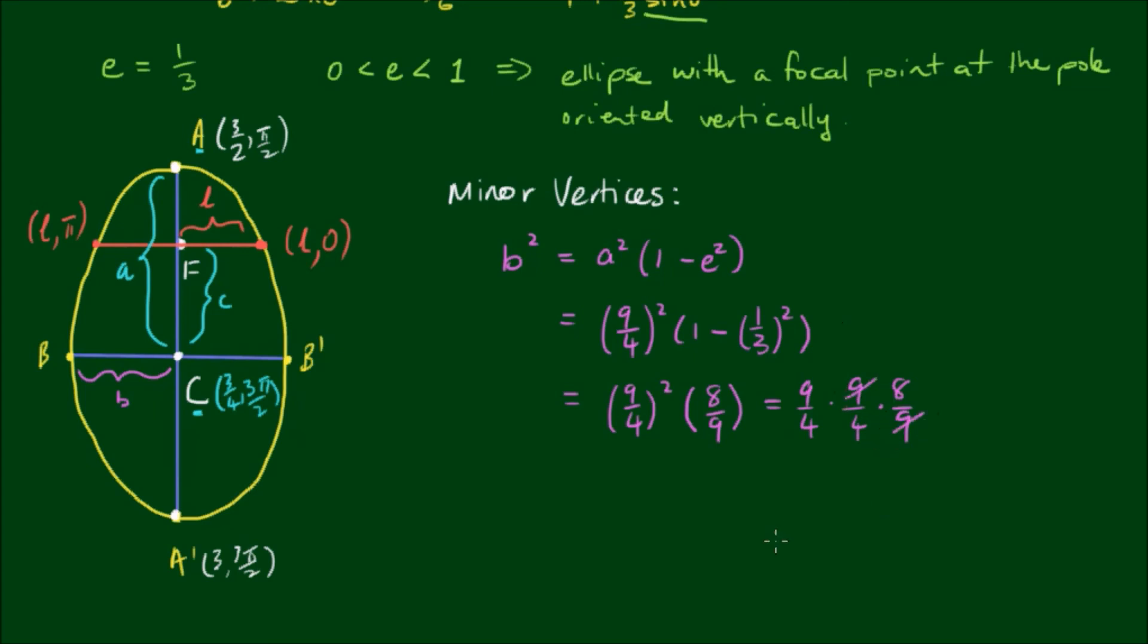So I'll write that as 9 on 4 by 9 on 4 by 8 on 9. A 9 can cancel with a 9. A 4 can cancel with an 8, so we have 2 left on the top. And the 2 can cancel with a 4 here, so we have 2 left on the bottom. So we're left with 9 over 2. So b is equal to then the square root of 9 over 2, which equals 3 on root 2.